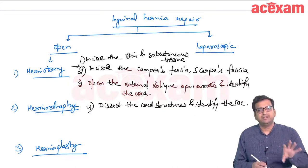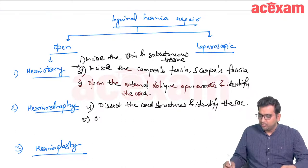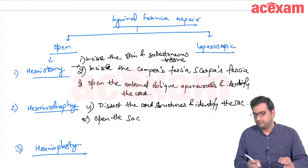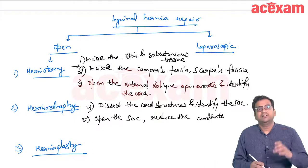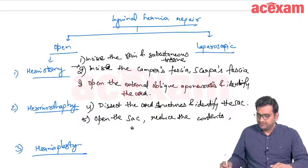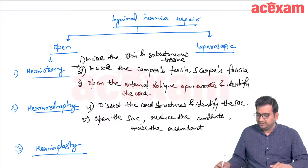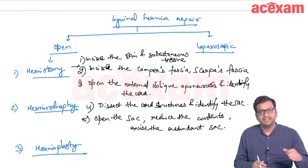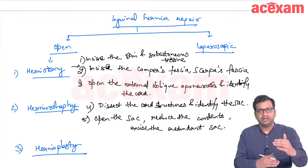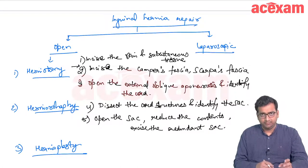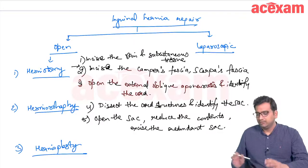Once the sac is identified and dissected, we open the sac — always in indirect hernias. Then we reduce the content and excise the redundant sac. These steps constitute herniotomy, which is the complete procedure for pediatric patients.